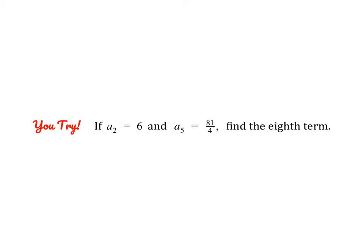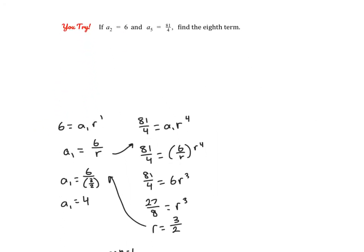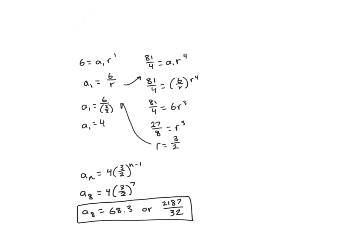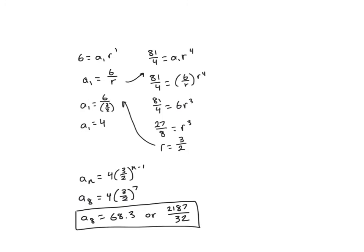Go ahead and pause the video and give this problem a try. Here I use that same process: I set up two equations, solved for a sub 1 and substituted to solve for r, then substituted again to solve for a sub 1 completely. Here's the formula, and to find the eighth term, I just plug in 8.